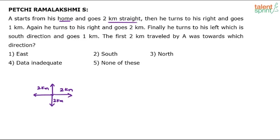All we know is A goes 2 kilometers straight and then turns to his right. But which right? From north, the right is east. From east, the right is south. From south, the right is west, and from west the right would be north. So we are confused — we do not know what the starting direction of A is. We know the starting point and the distance traveled initially, but we do not know the starting direction.